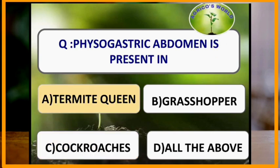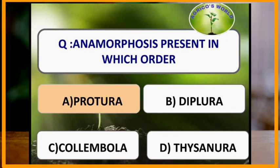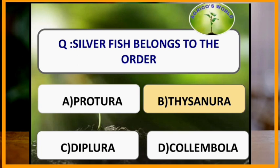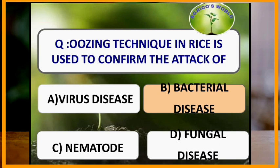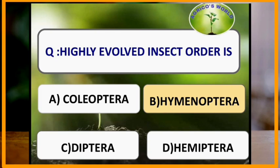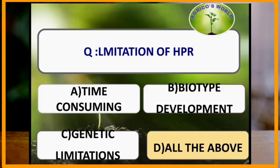Nodus wing is present in the order Odonata. Physogastric abdomen is present in termite queen. Anamorphosis is present in the order Protura. Silverfish belongs to the order Thysanura. Oosing technique in rice is used to confirm attack of bacterial diseases. The highly evolved insect order is Hymenoptera. Limitations of host plant resistance include: it is time consuming, biotype development occurs, and there are genetic limitations.